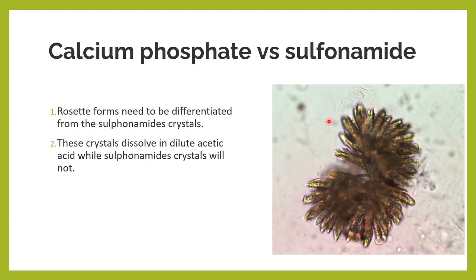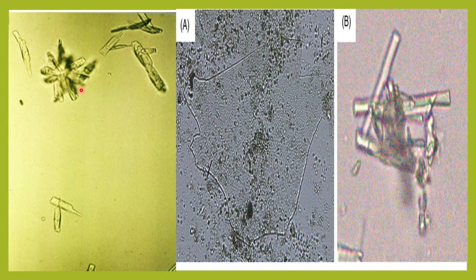We have to differentiate calcium phosphate crystals from sulfonamide crystals. When a patient is consuming sulfa drugs, sometimes it crystallizes in the urine forming sulfonamide crystals. Calcium phosphate is soluble in dilute acetic acid, whereas sulfonamide crystals are not soluble in dilute acetic acid.